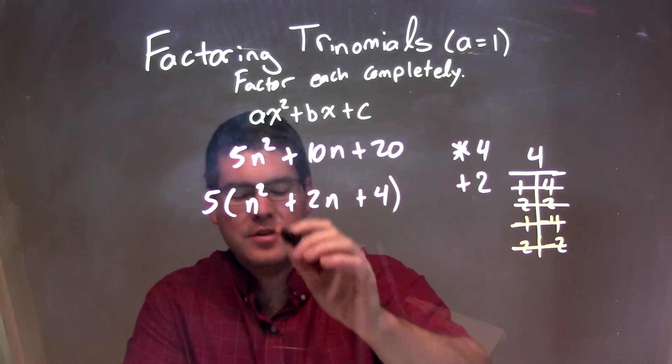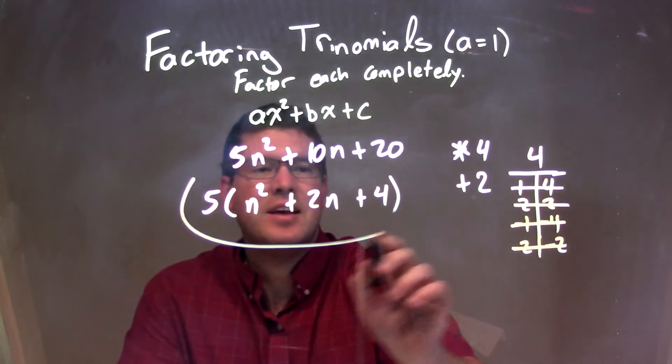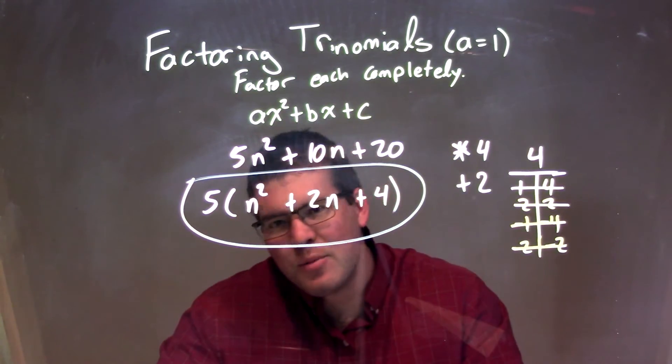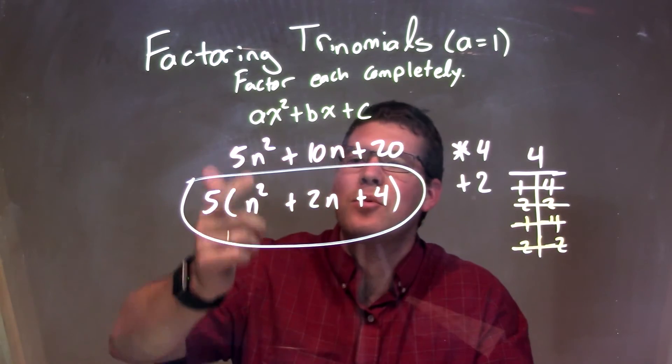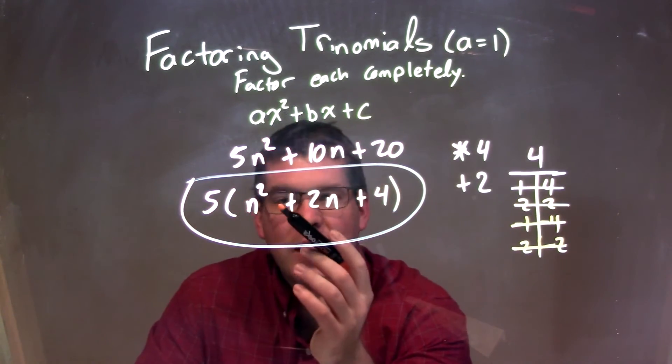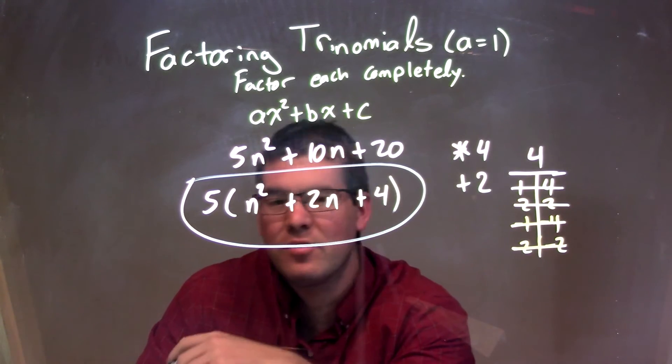And so that's it. We have factored this out completely as it is. And we don't necessarily say it's not factorable, because we pulled out a 5 from it. But really, we're left with just 5 times (n² + 2n + 4) as our final answer.